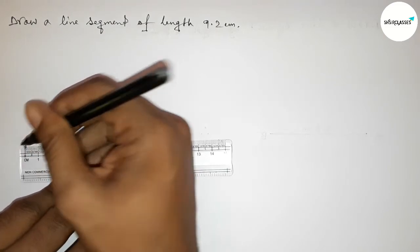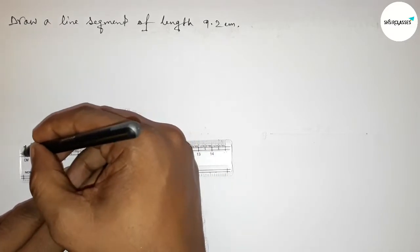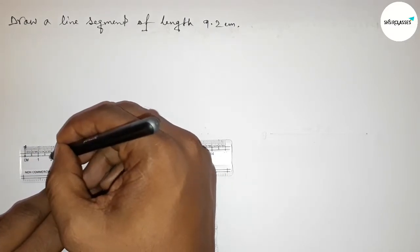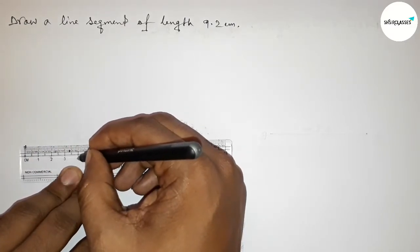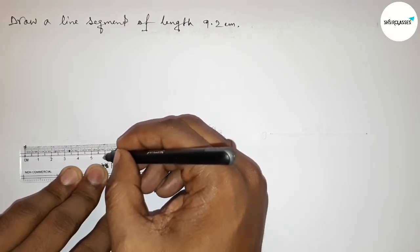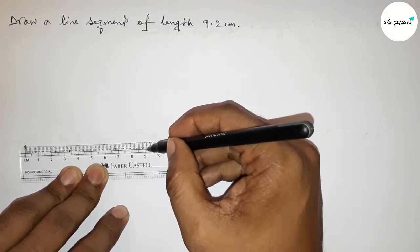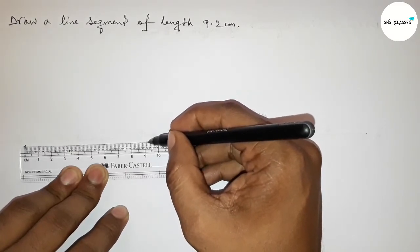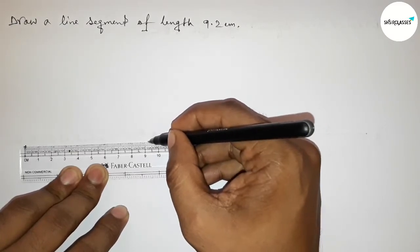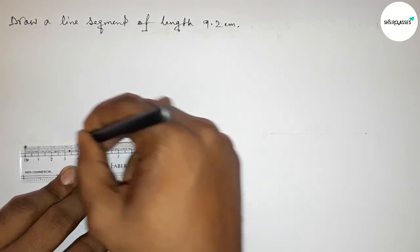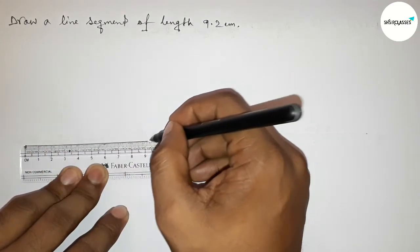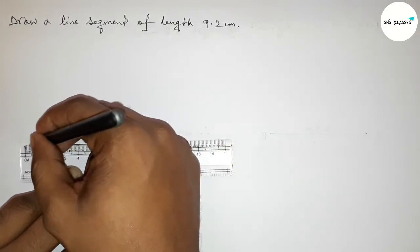Then counting, so this is zero, one, two, three, four, five, six, seven, eight, nine. So this is nine, and nine point one, and this is nine point two. So first joining this line, so this is nine point two centimeter.